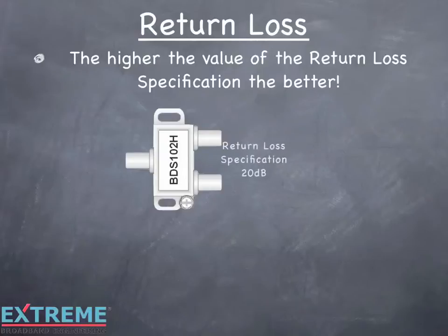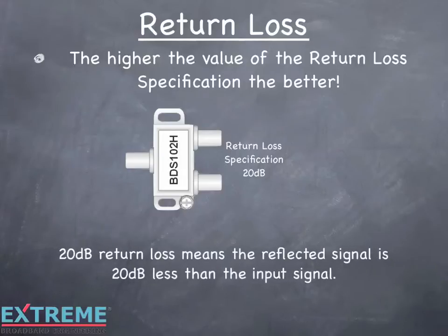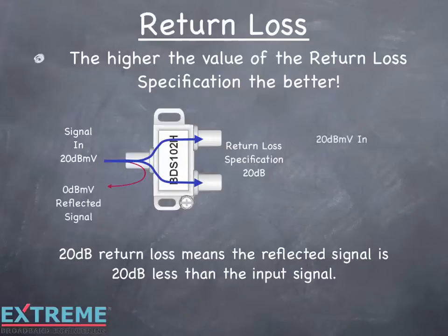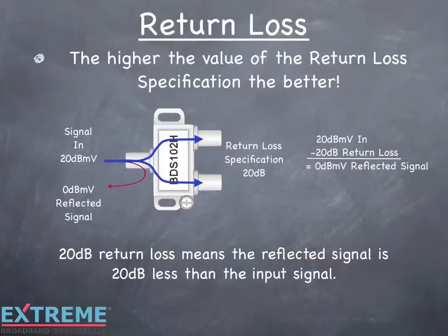In this example, we're showing a two-way splitter with a return loss specification of 20 dB. A 20 dB return loss means that the reflected signal would be 20 dB less than the original input signal. On the input port, we're feeding with a signal of 20 dBmV. Most of the signal passes through the splitter, but a small amount is reflected back to the signal source. The reflected signal is 20 dB lower than the input signal, at minus 0 dBmV — that is, 20 dBmV in minus 20 dB return loss for a reflected signal of 0 dBmV. So with return loss, whatever the value of the return loss specification is, the reflected signal would be that amount lower than the original signal.